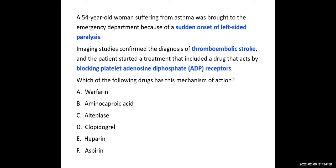I showed you the drug list several times — the question asks which drug blocks ADP receptors, which is the P2Y12 receptor. The correct answer is D — clopidogrel. Warfarin inhibits vitamin K epoxide reductase enzyme. Aminocaproic acid inhibits plasminogen activation and is an antidote for thrombolytic drugs. Alteplase converts plasminogen to plasmin. Heparin provides antithrombin-mediated inhibition of thrombin. Aspirin inactivates COX-1.